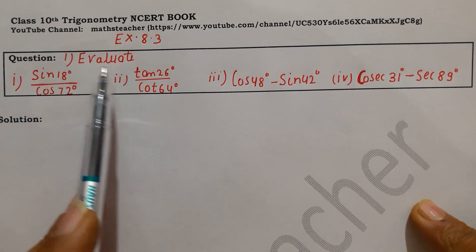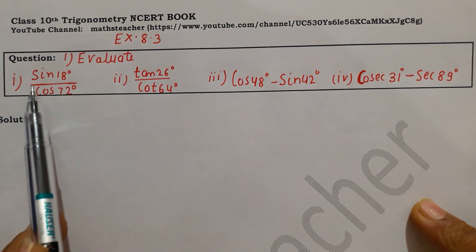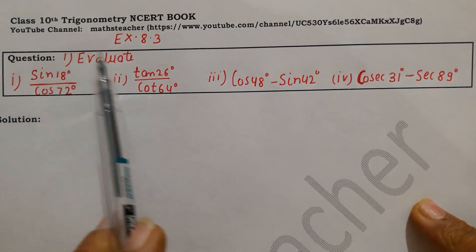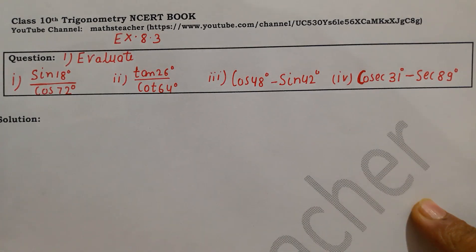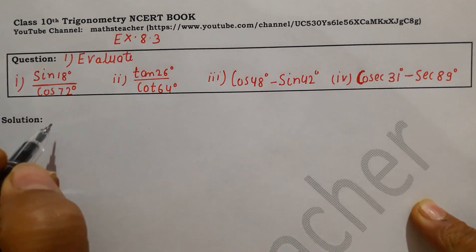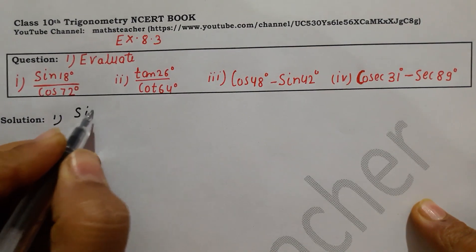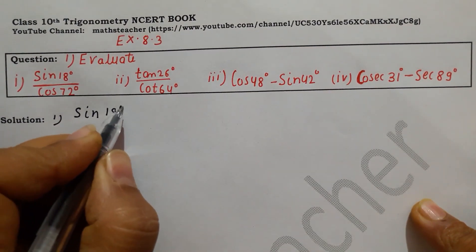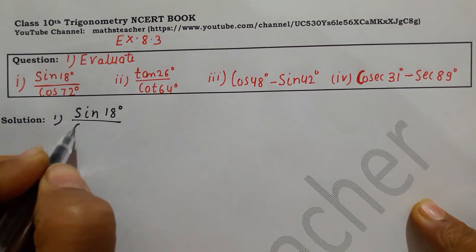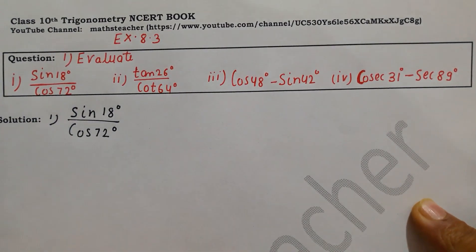Question number one — evaluate 4 parts. We will solve all 4 parts in this video. Question number one is sine 18 degree divided by cos 72 degree.